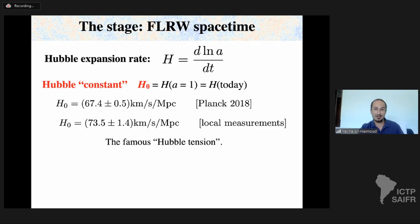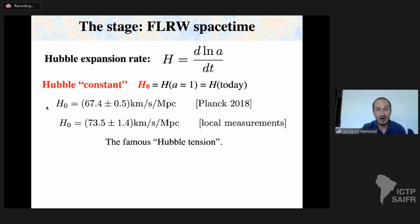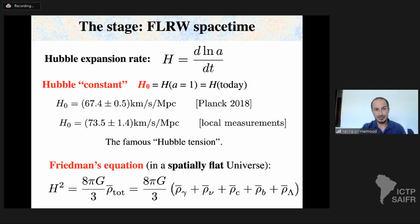One of the famous tensions in cosmology is the Hubble tension: CMB anisotropies give H₀ = 67 ± 0.5 km/s/Mpc, while local measurements yield a higher value in tension with this. I won't go into details here, but I hope to give you tools to understand how H₀ is inferred from CMB measurements.